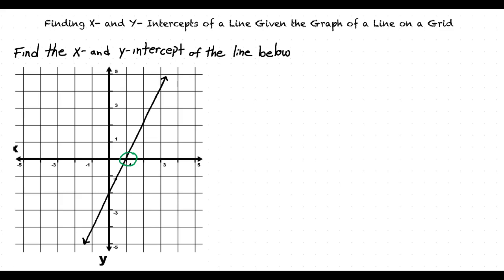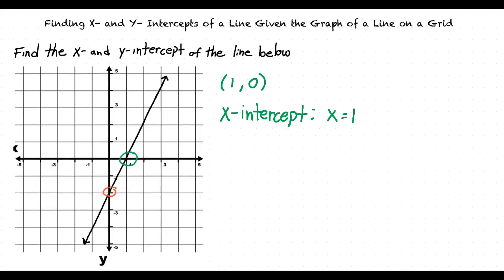The line crosses the x axis at this point. To find the y intercept, we look at the y axis and find the point at which the line crosses it. This line crosses the y axis at the coordinate point, so the y intercept will be y is equal to negative 2.